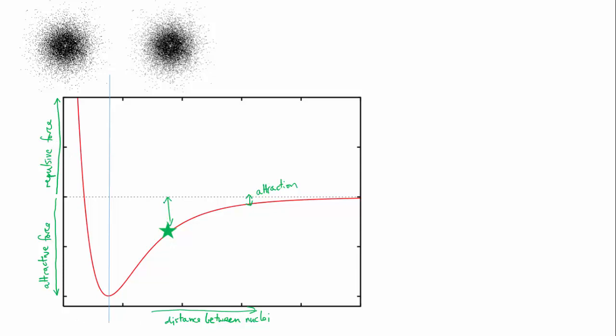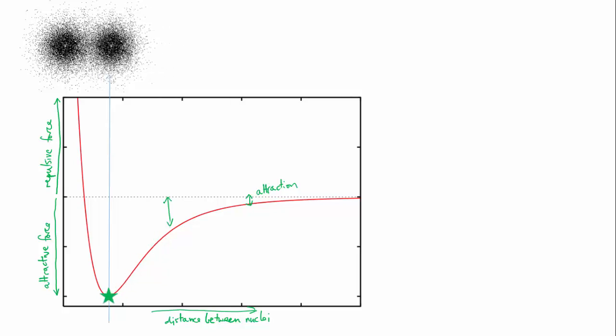At this point, the nuclei are not repelling each other because they're shielded from each other by their electron clouds. The atoms continue to get closer until the point of maximum attraction is reached. The atoms are now at their preferred distance, and the attraction is strong. We would say at this point that a bond has formed.